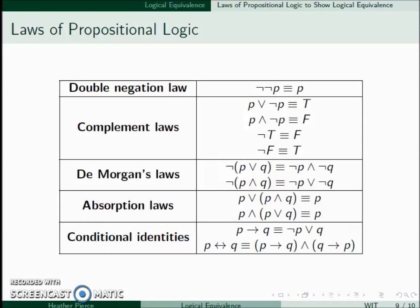De Morgan's laws let us move a negation sign within a parenthesis. The negation of (P ∨ Q) is ¬P ∧ ¬Q. The negation of (P ∧ Q) is equivalent to ¬P ∨ ¬Q. With De Morgan's laws, we negate every single proposition and we switch disjunction to conjunction and conjunction to disjunction — we switch the ands and the ors.